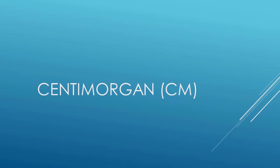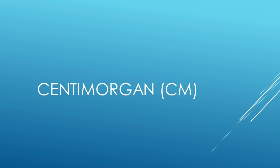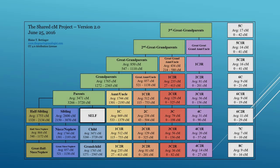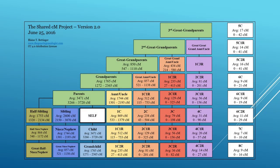These sites measure your relationship to your genetic matches using something called a centimorgan, abbreviated with a lowercase c and an uppercase M. The chart on your screen reflects the centimorgan amounts you may expect to see in your own family tree. Each block represents the relationship you have to a person, the average centimorgans you may share with them, and the range of possible centimorgans for that relationship.